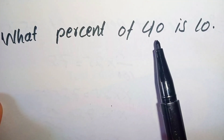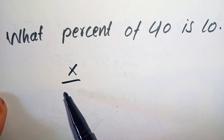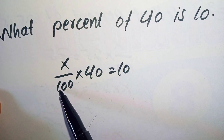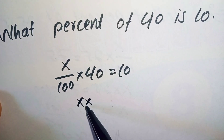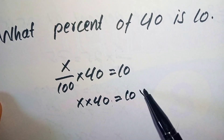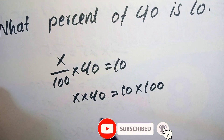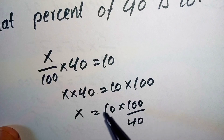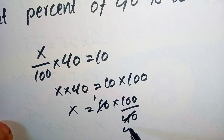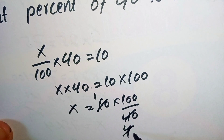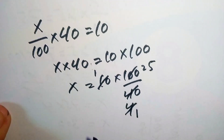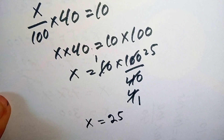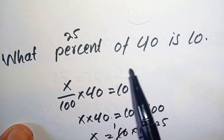In this example we are finding what percent of 40 is 10. So we suppose that X percent of 40 is 10. Multiply 100 by 10, so X multiplied by 40 is equal to 10 times 100. Divide by 40: X is equal to 10 times 100 divided by 40. So 10 times 1 is 10, 10 times 4 is 40, 4 times 25 is 100, so X is equal to 25. That means 25 percent of 40 is 10.